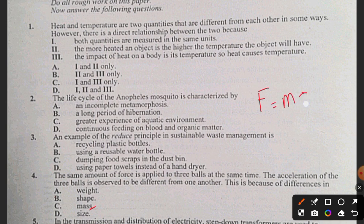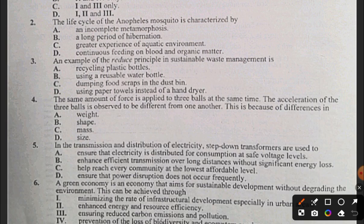Question 5: In transmission and distribution of electricity, step down transformers are used to: A) ensure that electricity is distributed for consumption at the safe voltage levels, B) enhance efficient transmission over long distances without significant energy loss, C) help reach every community at the lowest affordable level, D) ensure that power disruption does not occur frequently. The answer to question five is A.